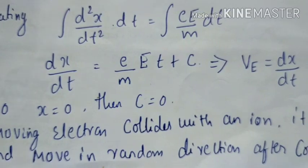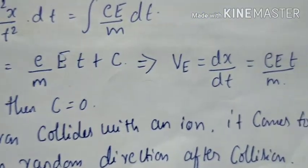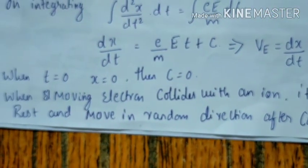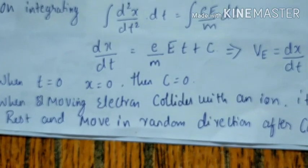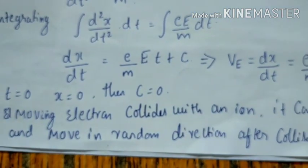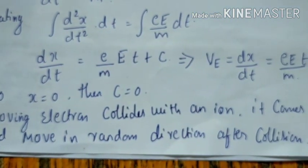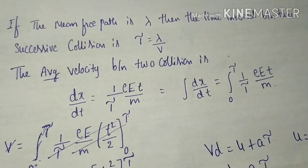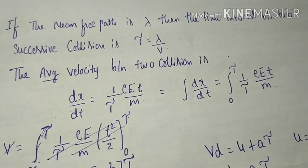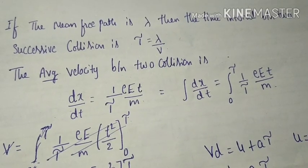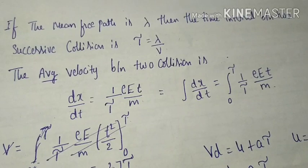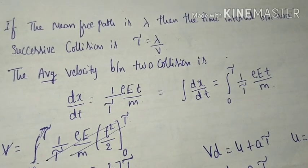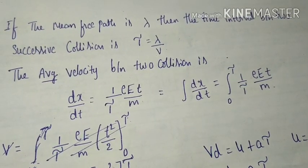When a moving electron collides with an ion, it comes to rest and moves in a random direction after the collision. If the mean free path is taken as lambda, then the time interval between two successive collisions is tau = lambda/v.